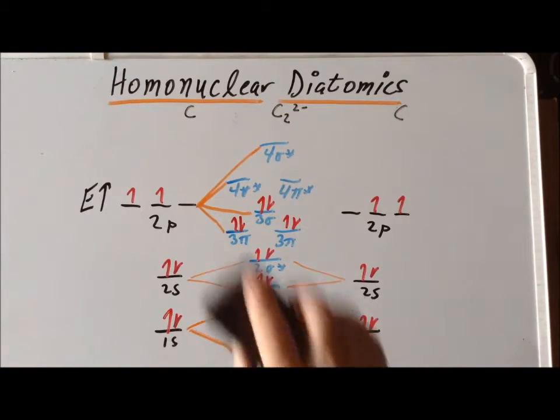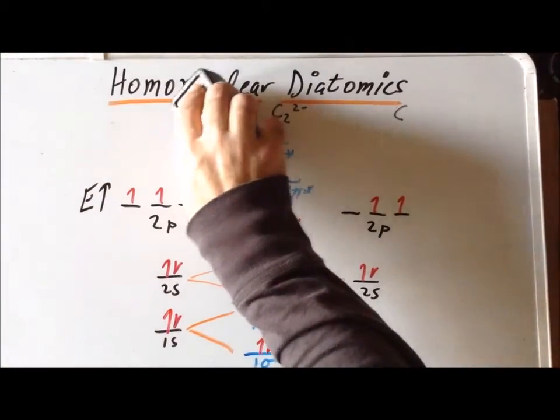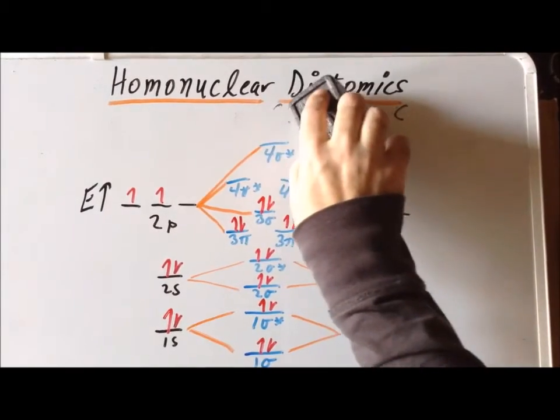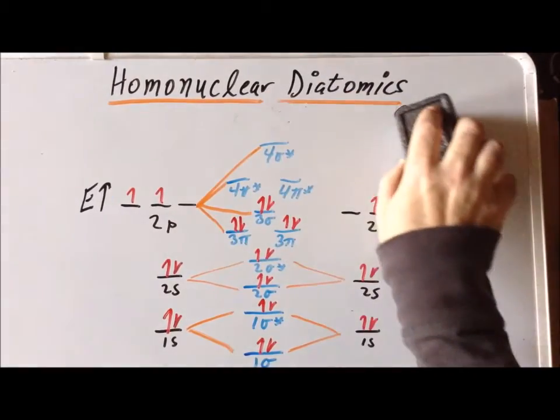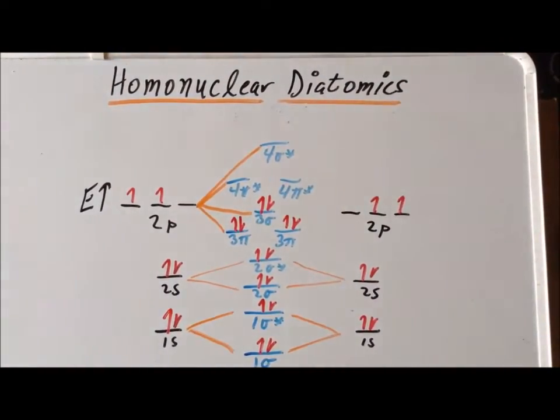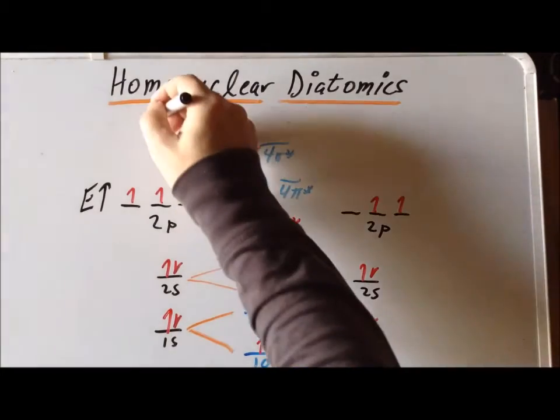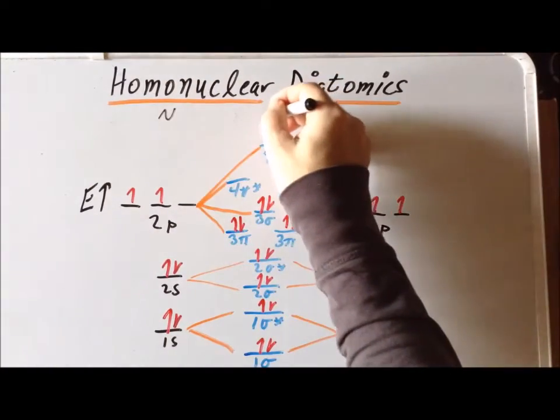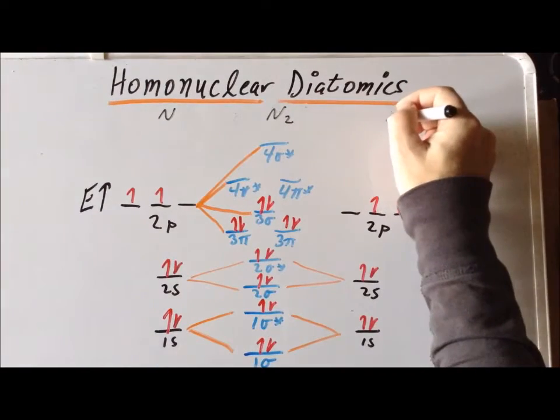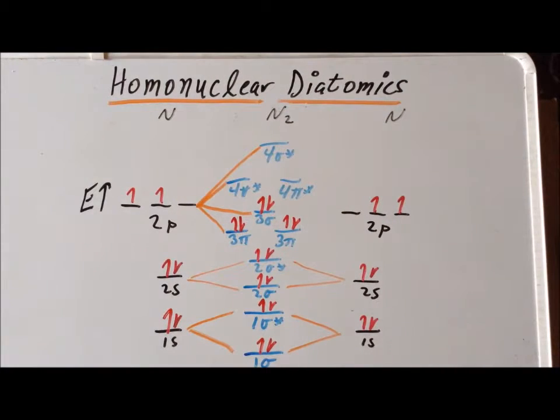Our next molecule of interest is dinitrogen, N2, which makes up about 80 percent of the atmosphere. So it's an incredibly important compound.